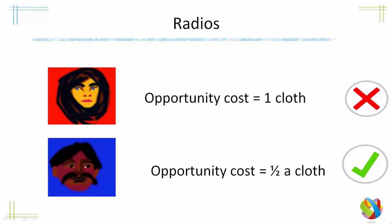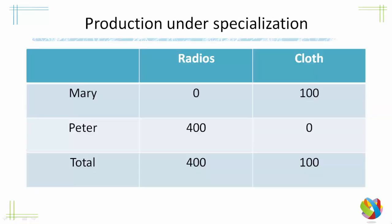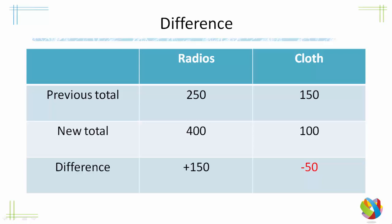Let's see what happens if they specialise and only produce the things in which they have a comparative advantage. Mary is producing 100 pieces of cloth with all her resources, and Peter is producing 400 radios with all of his resources. The previous total was 250 radios — we are now producing 400, meaning the world is better off by 150 radios. For cloth, previously they were producing 150, now 100, so there are 50 pieces of cloth fewer than before. Let's see what they can do about that.